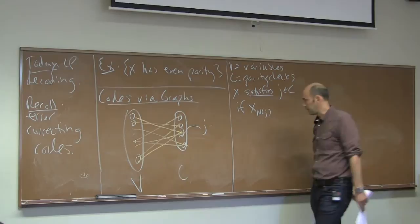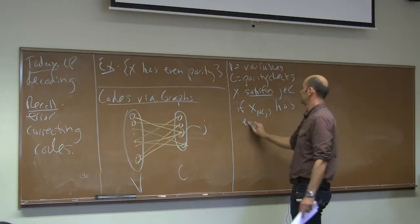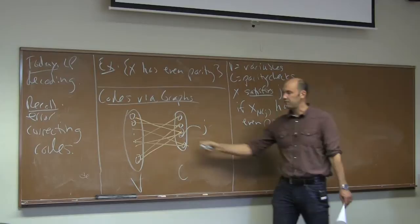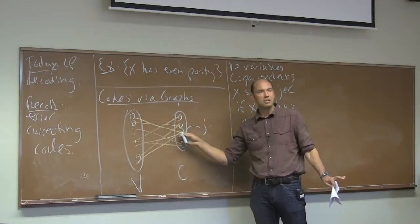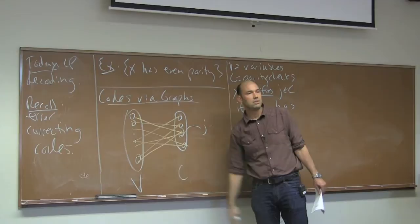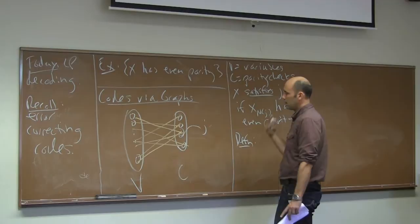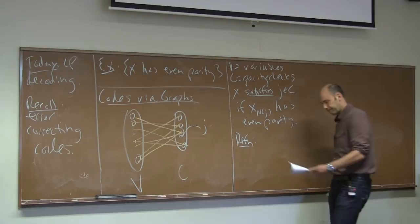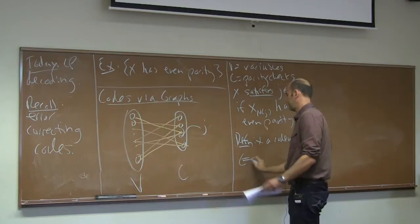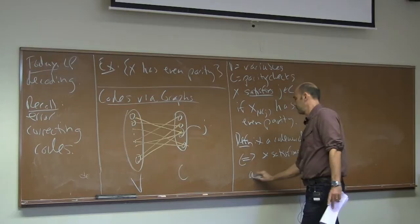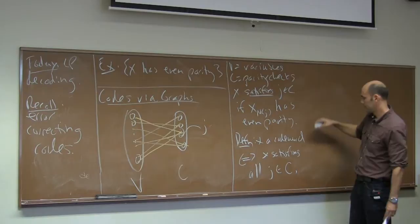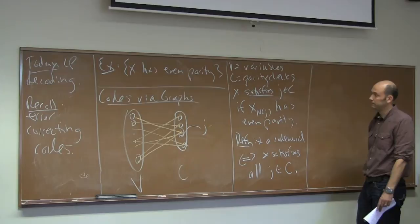So if j has five neighbors, then for this parity check to be satisfied, 0, 2, or 4 of those five neighbors should be set to 1 — not 1, not 3, not 5. The code words are exactly the vectors which satisfy every single one of the parity checks. So x is basically a 0,1 labeling of the variable vertices, and x projected onto N(j) is some five-bit vector.